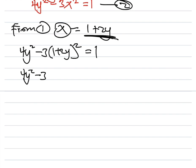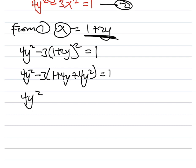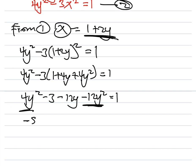Expanding the bracket: 4y² − 3(1 + 4y + 4y²) = 1. Distributing the −3: we get 4y² − 3 − 12y − 12y² = 1. Combining the y² terms: −8y² − 12y − 3 = 1.